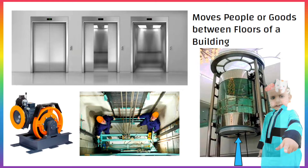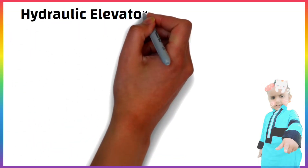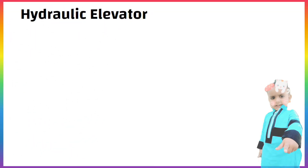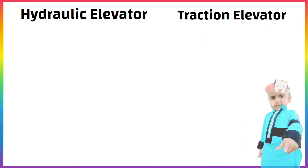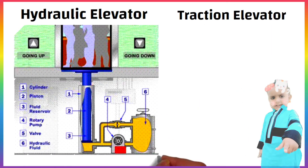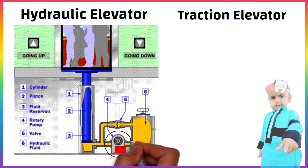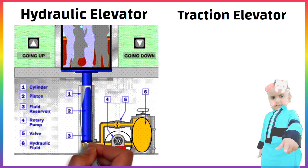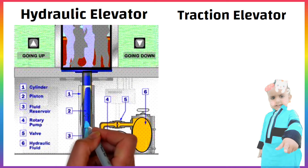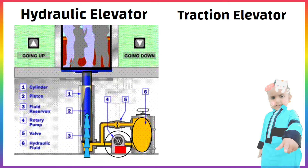Elevators are of two types: one, hydraulic elevator; two, traction elevator. Hydraulic lifts are powered by electronic pumps which transmit the hydraulic fluid to the jack. The lift has a piston at its base which will push it up.